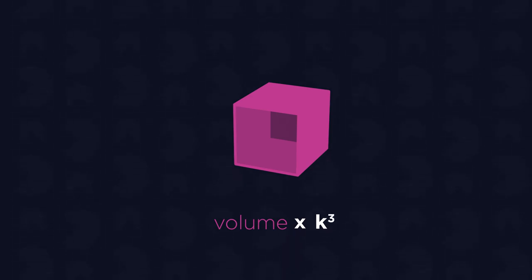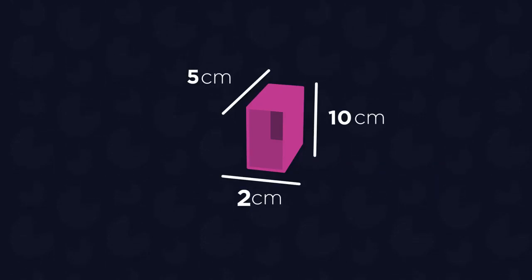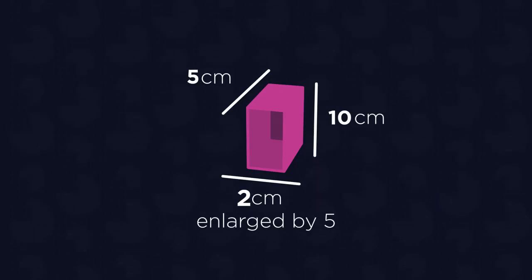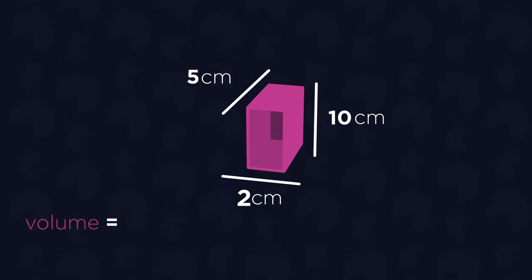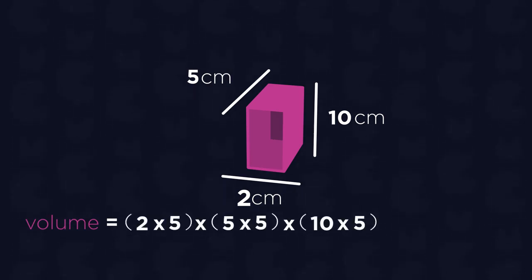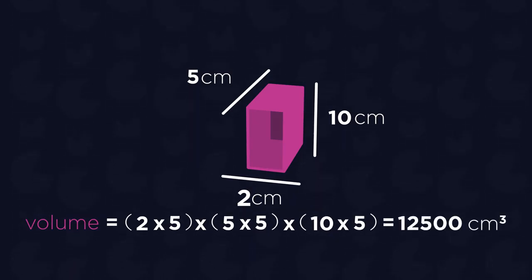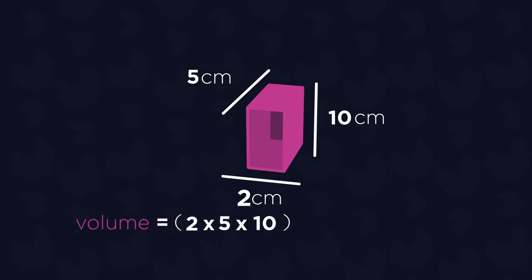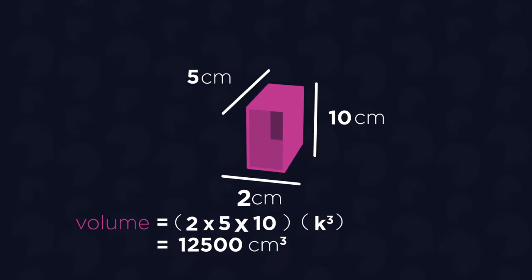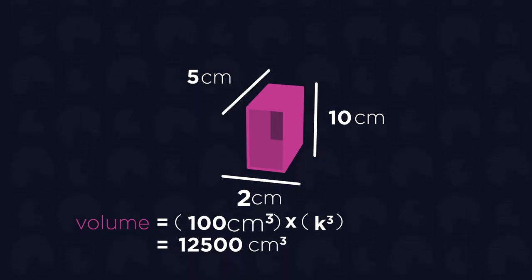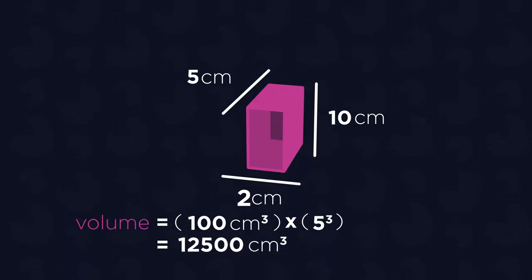Let's try it with our rectangle example. Let's add another dimension to our 2 by 5 rectangle — say the height is 10. We enlarge the shape by a scale factor of 5. What's the volume? We could work this out by calculating the enlarged lengths of each side and then multiplying them together: so 2 times 5, times 5 times 5, times 10 times 5, which equals 12,500cm cubed. Or we can simply multiply the original volume — so 2 times 5 times 10, which equals 100cm cubed — by K cubed, which is 5 cubed, which also equals 12,500cm cubed.